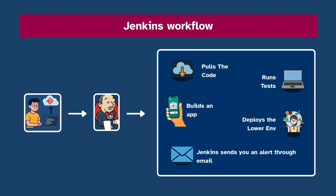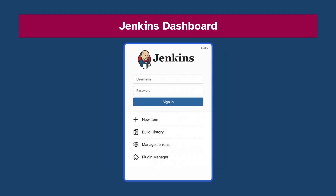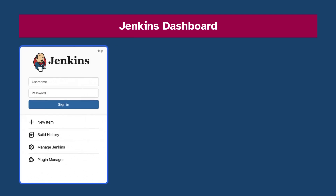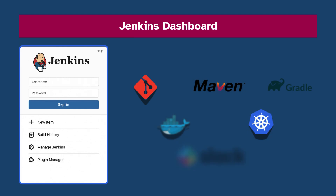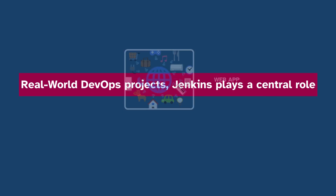When you log into Jenkins you will see a dashboard. From there you can create and manage jobs called pipelines, monitor build history, check logs, and install plugins. Jenkins has thousands of plugins — you can integrate with tools like Git, Maven, Gradle, Docker, Kubernetes, Slack, and many more. This makes Jenkins super flexible.